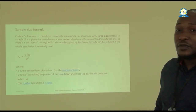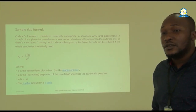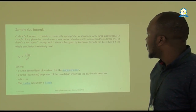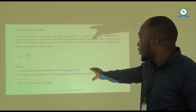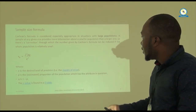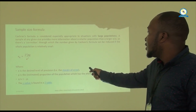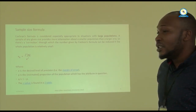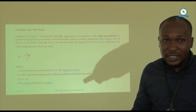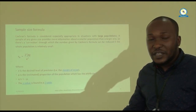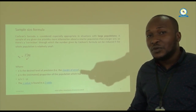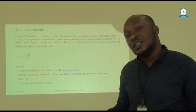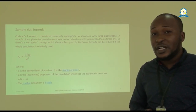Here is the sample size formula, drawn from Cochrane's formula, which is considered for a very large sample. In the formula, Z is the Z-value from the Z-table. E is the level of precision, which is the margin of error — for example, if we are 95% confident, the remaining 5% is the margin of error. If we are 99% confident, then 1% is the allowable margin of error. The sample proportion is simply the sample drawn from the population.